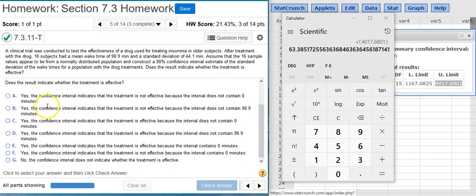And now, the second part of this problem asks, Does the result indicate whether the treatment is effective? Well, the result we have is a confidence interval estimate on the standard deviation. Because standard deviation is the square root of the variance, it's measuring the variation that we have in the data values for our sample set.